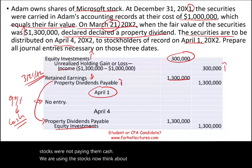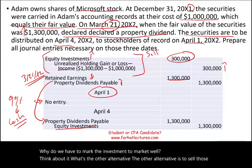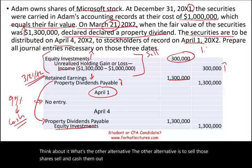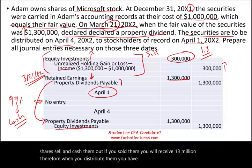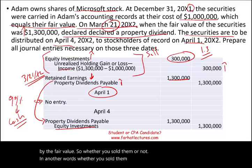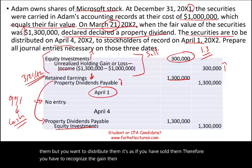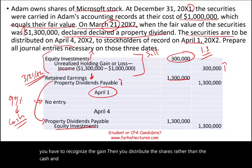Now think about it for a moment. Why do we have to mark the investment to market? Think about the alternative: you could sell those shares and cash them out, receiving $1.3 million. Therefore, when you distribute them, you have to reduce retained earnings by the fair value. Whether you sold them and realized the gain, or kept them and distributed them, it's as if you sold them. Therefore, you have to recognize the gain, then distribute the shares rather than cash. This is how property dividends work.